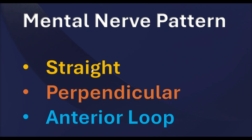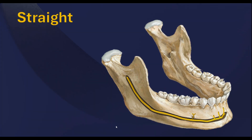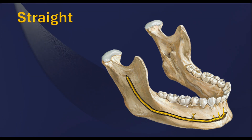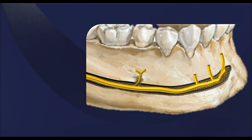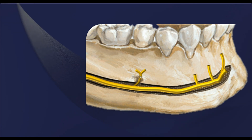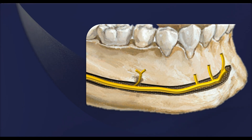First, we will start with the straight pattern. Looking at this picture, the nerve follows a direct road from the mandibular canal to the mental foramen, making it the simplest and most predictable pathway.